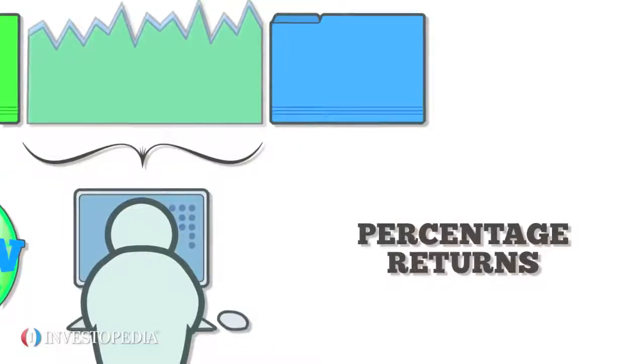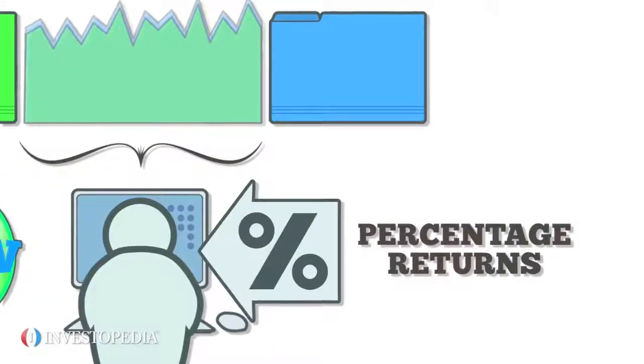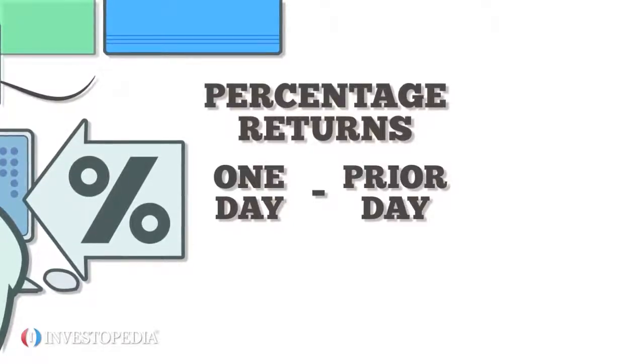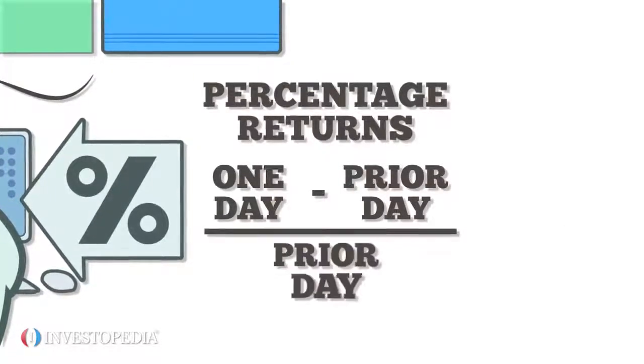The percentage returns for the equity and benchmark must be calculated before the historical data can be plugged into the equations. To do this, take one day's price and subtract the prior day's price, then divide by the prior day's price.